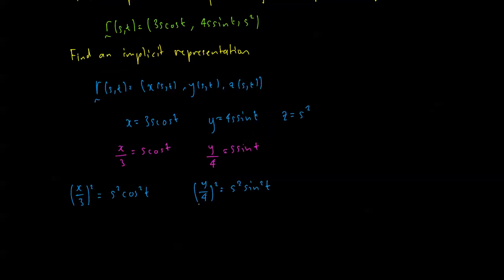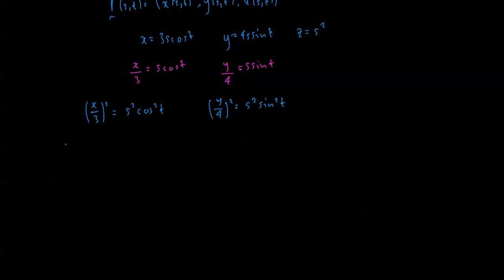Adding them up, (x/3)² + (y/4)² = s² cos² t + s² sin² t.